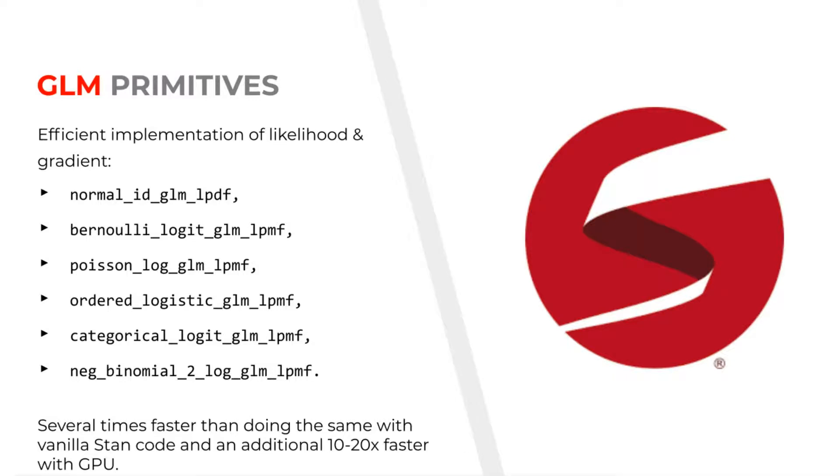Even if used without a GPU, the GLM specializations are several times faster than corresponding vanilla STAN code, which separately computes the linear term, transformation, and likelihood. For the GPU, on top of that, we get further 10 to 20 times speed-ups.